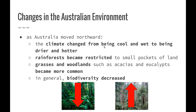Biodiversity — we can look at the word and break it down: bio meaning living, diversity meaning multiple, numerous, lots of. So the number of different types of living organisms has decreased across Australia as a result of our movement north and therefore the change in our climate.